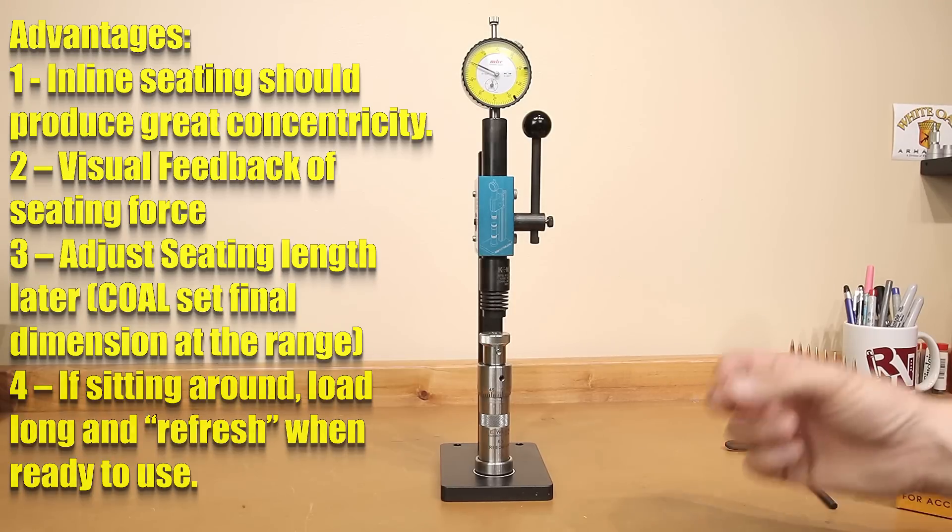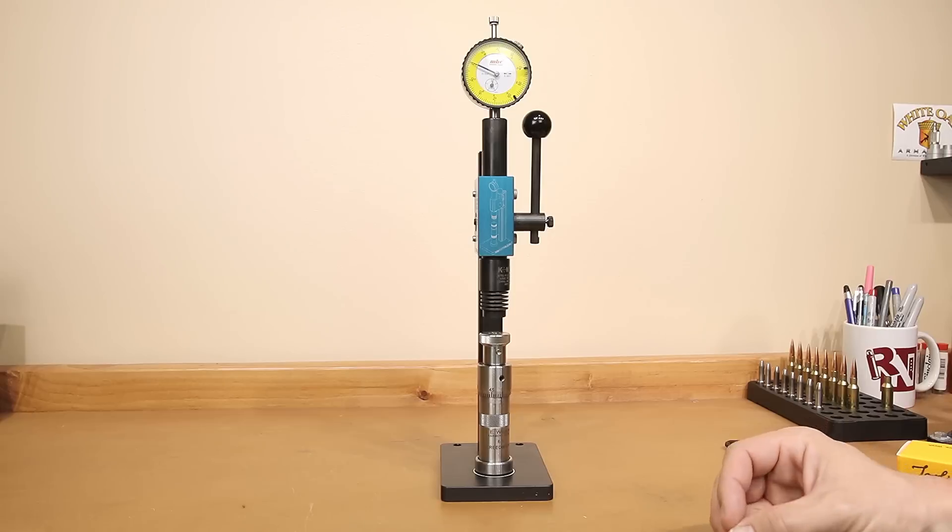By adjusting your cartridge overall length before you're ready to shoot, it allows you to refresh the case necks and possibly improve the standard deviations of your loads when you really want them to perform. This seems to be a very common practice for competitors that do their final seat on their reloads sometimes the night before the competition, just to keep their reloaded rounds fresh.